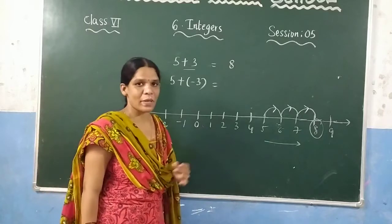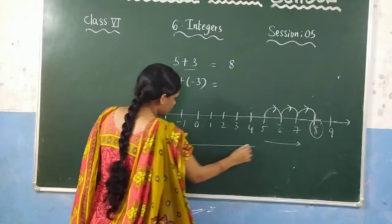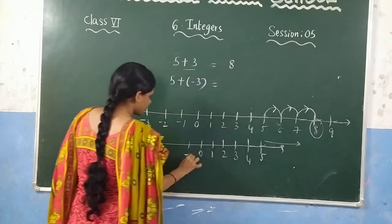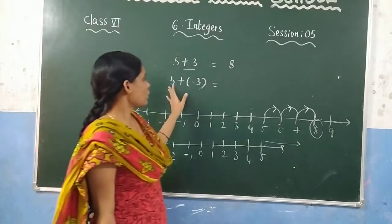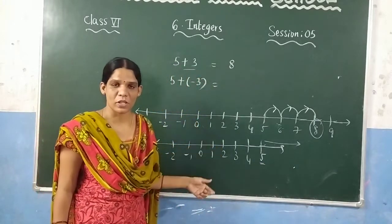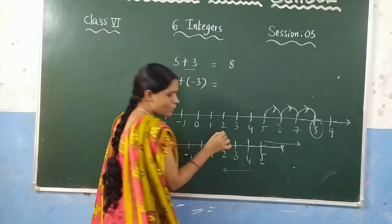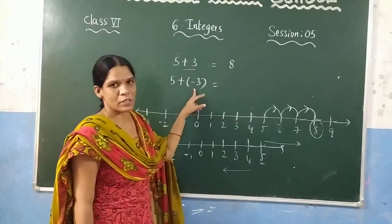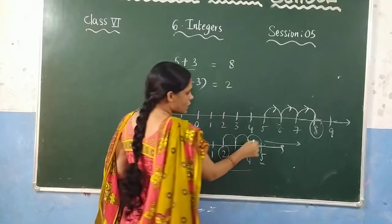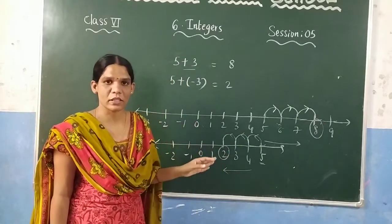Now the next example: 5 plus negative 3. Go to the number 5 first. Since we are adding a negative integer, go to the left side. Move 3 steps in the left direction: 1, 2, 3. The answer is 2. We draw the arrow in that direction. So, when adding a positive integer go right, and when adding a negative integer go left.